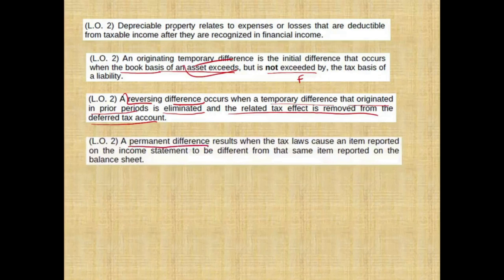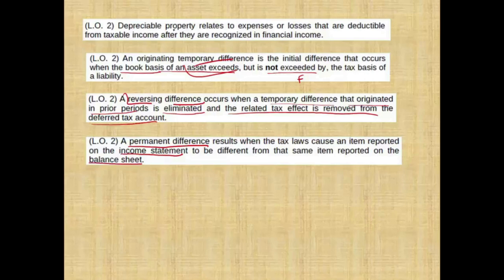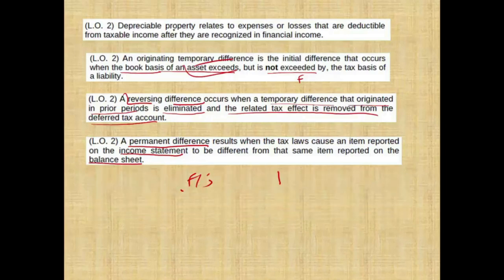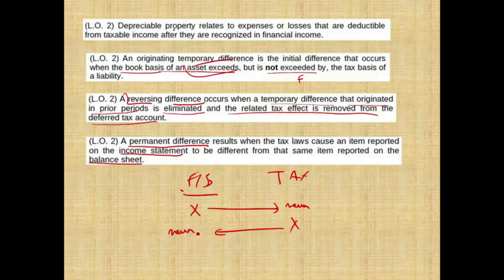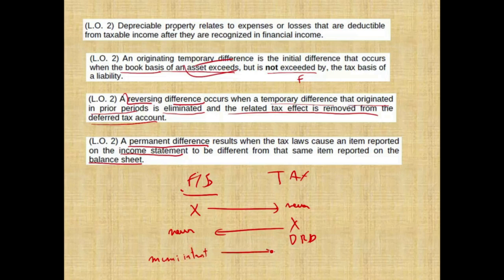A permanent difference results when the tax law causes an item reported on the income statement to be different from the same item reported on the balance sheet. Hopefully you know this is a false statement, because there's no such thing as an amount reported differently on the income statement than on the balance sheet. A permanent difference results when some item is reported on the financial statement but never goes into the tax return, or reported on the tax return but never on the financial statement. An example is the dividend received deduction — reported on tax but never for financial statements. Another example is municipal interest — reported on the financial statement but never for tax.